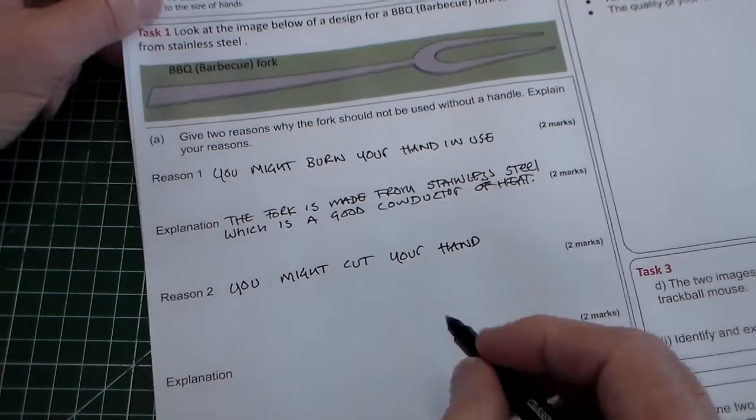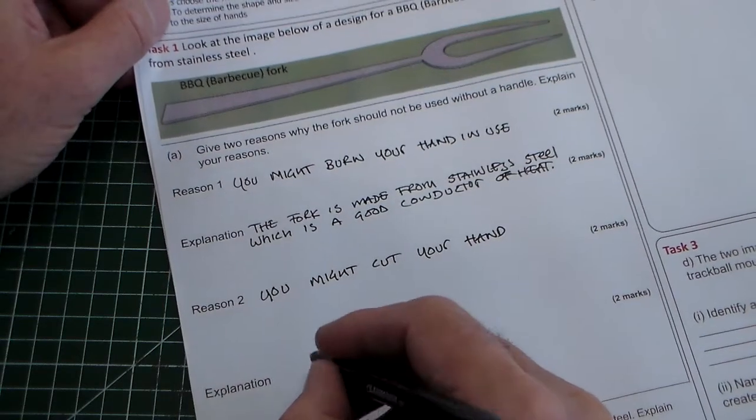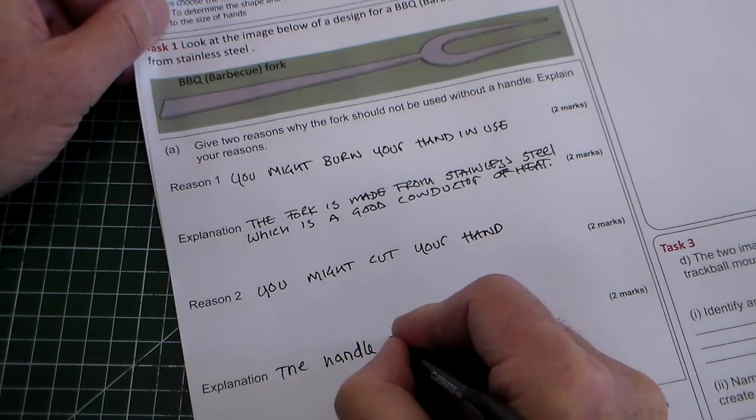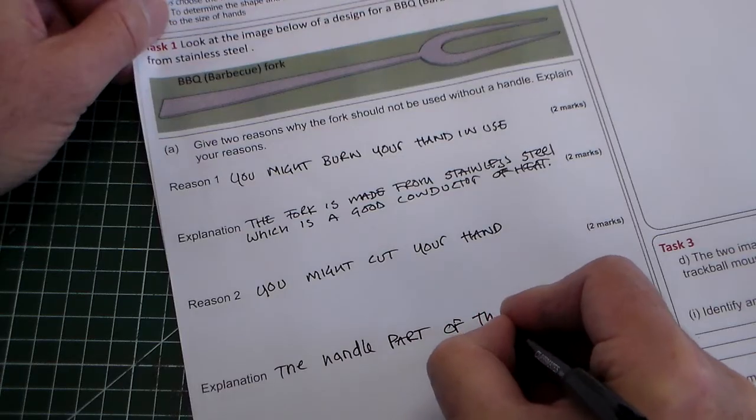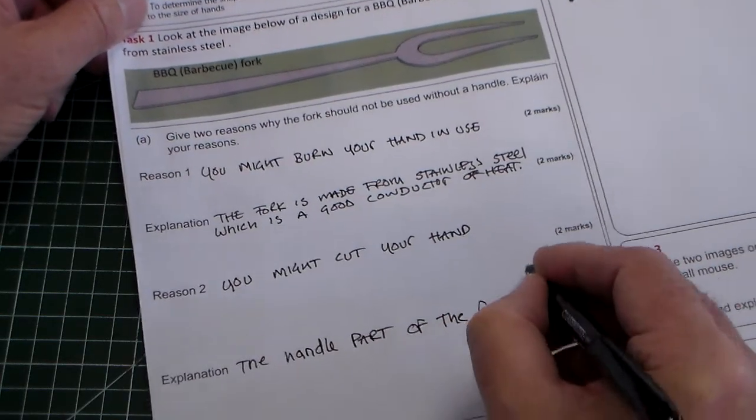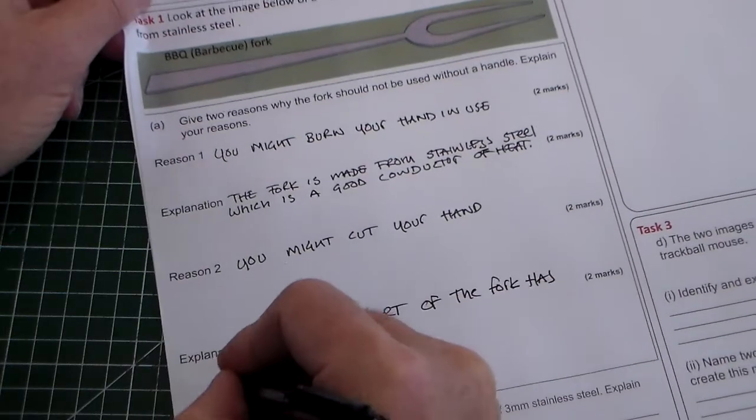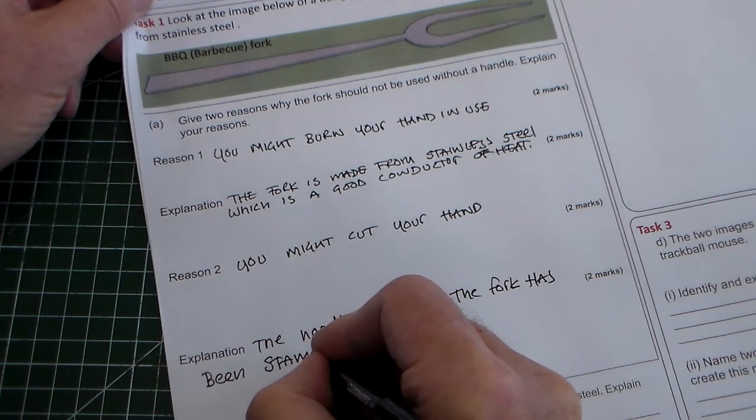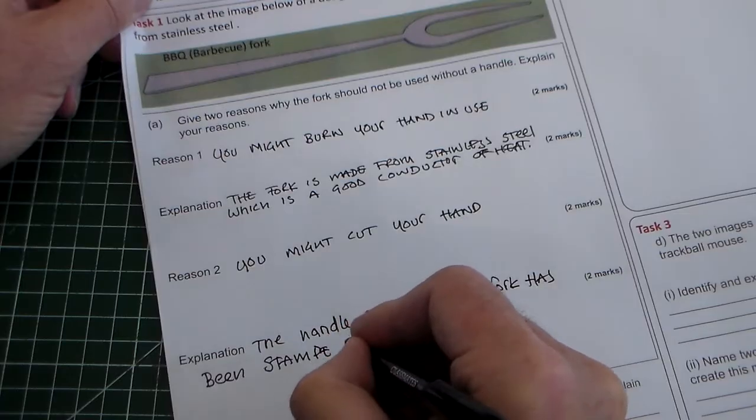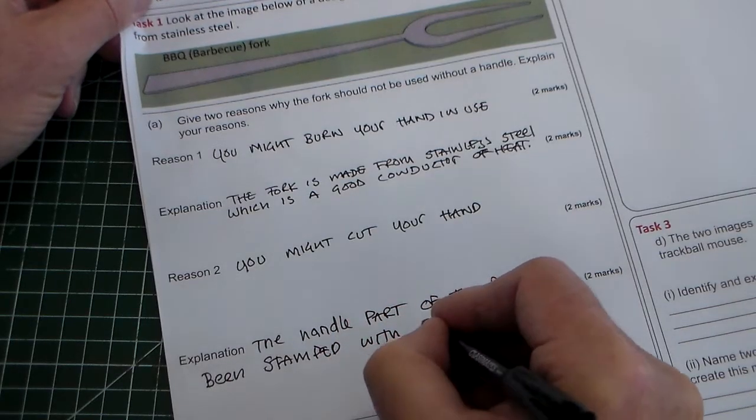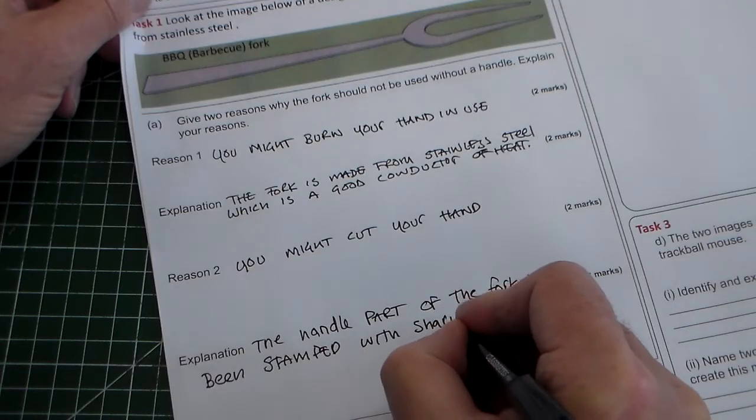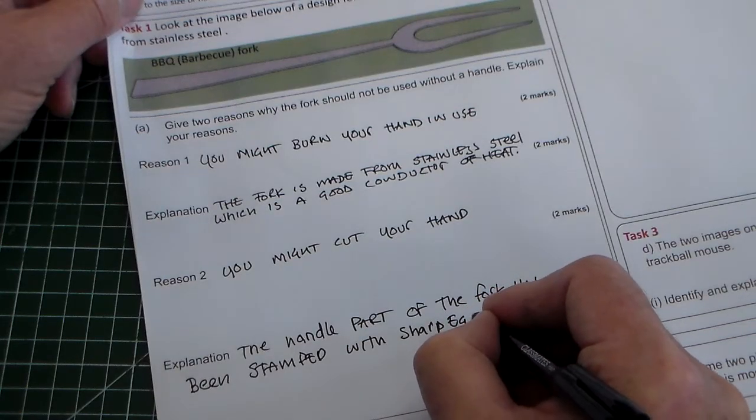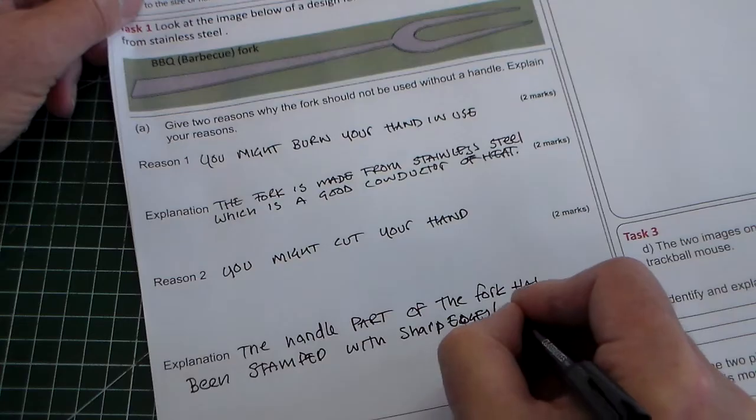And the explanation: the handle part of the fork has been stamped with sharp edges or we could say corners.